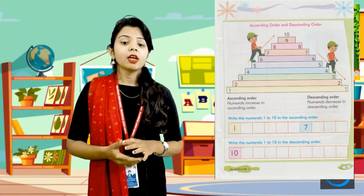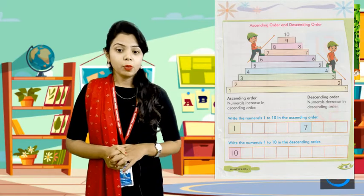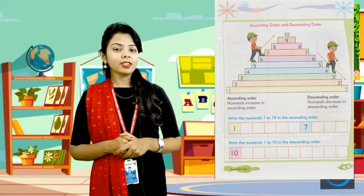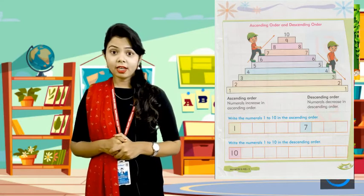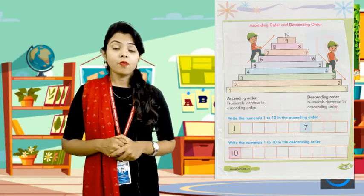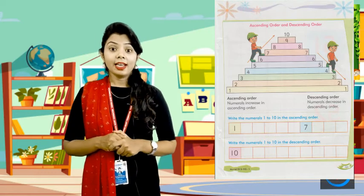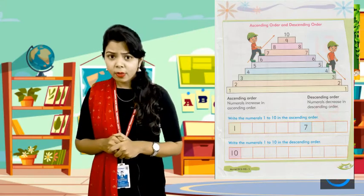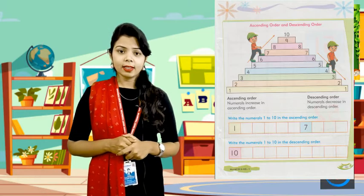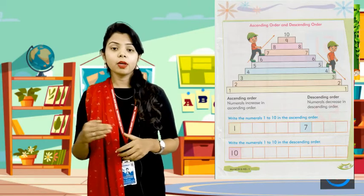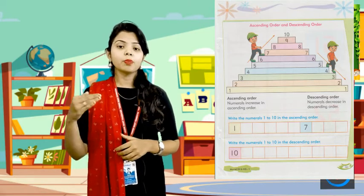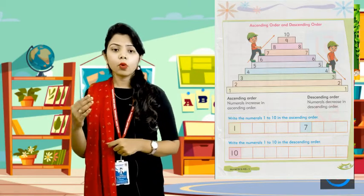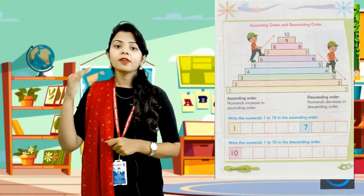So what do we have to write today? Write the numerals 1 to 10 in ascending order. The number continues to increase: 1, 2, 3, 4, 5, 6...